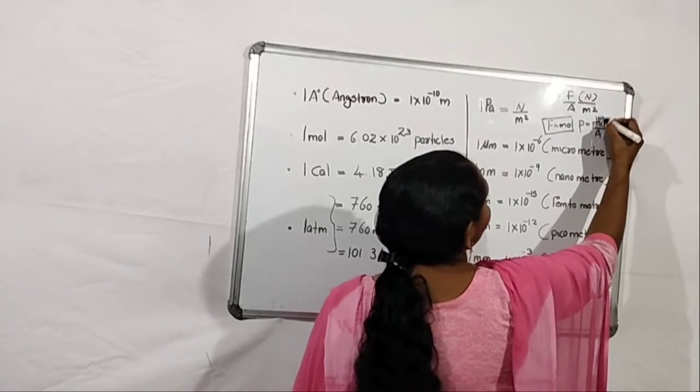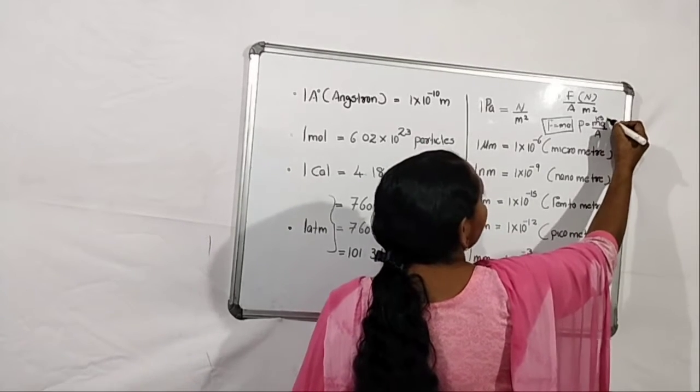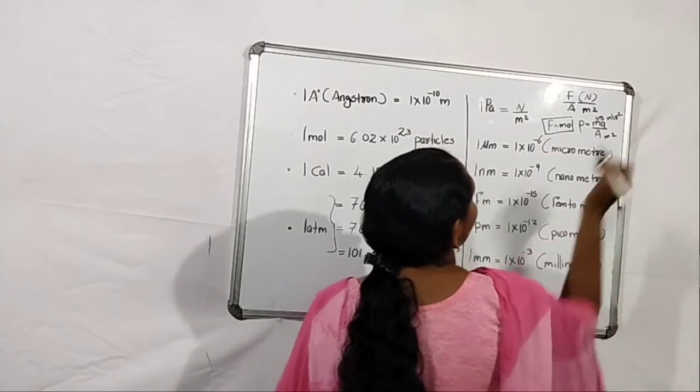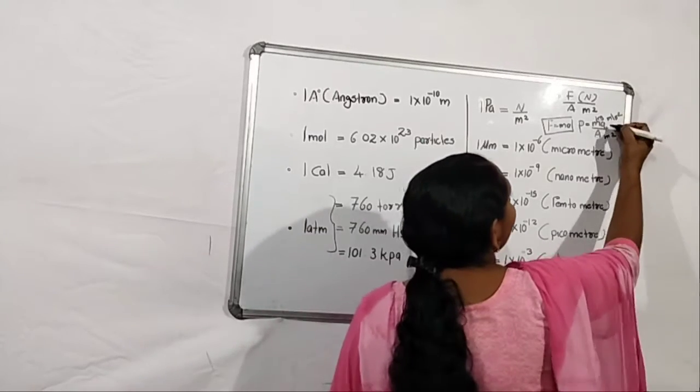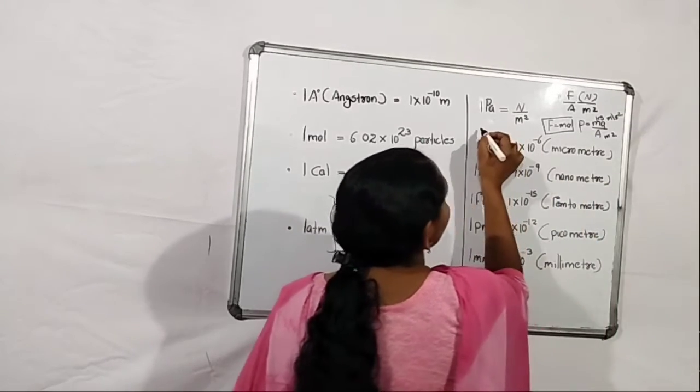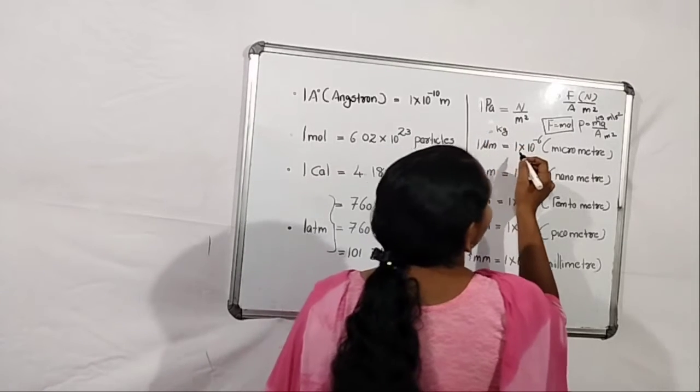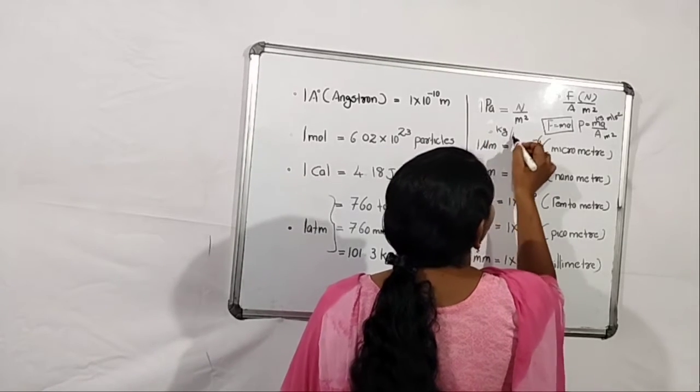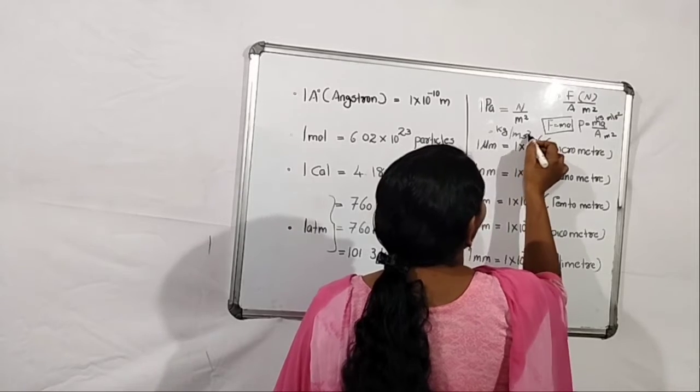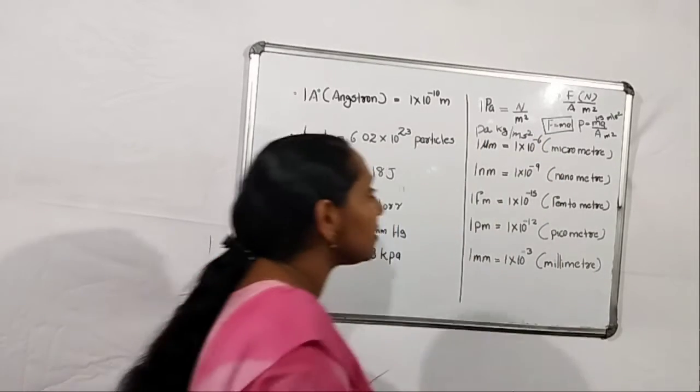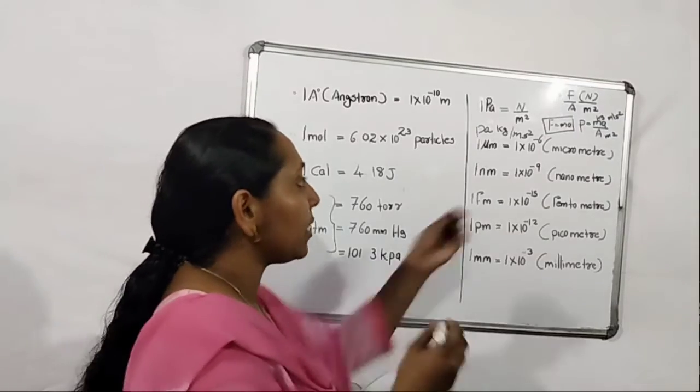M unit is kilogram, and acceleration unit is meter per second square. Area unit is meter square. So the meter, one meter will be cancelled. Last answer is kilogram per meter per second square. So pascal have another unit also, kilogram per meter second square, because of this expression.